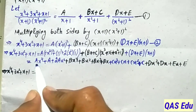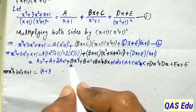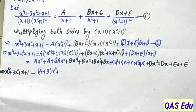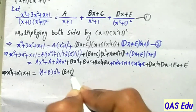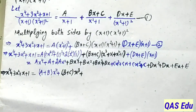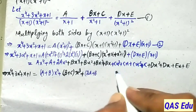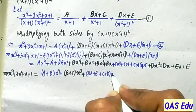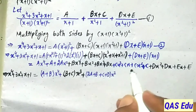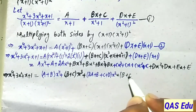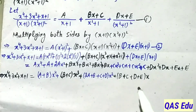Collecting like powers of x: x⁴ terms: A + B. x³ terms: B + C. x² terms: 2A + B + C + D. x¹ terms: B + C + D + E. x⁰ constant terms: A + C + E. Also expanding (Dx + E)(x + 1): Dx² + Dx + Ex + E.